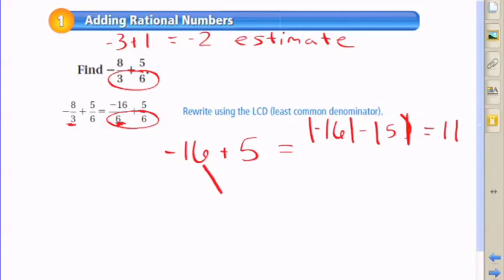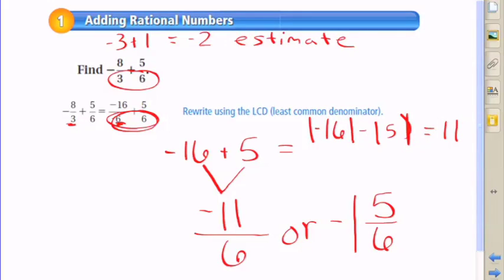We're going to use the sign from the larger absolute value. And we compare that here. I see that the larger absolute value is negative 16, so the answer is negative 11. And you throw that back over the denominator of 6. So the answer is negative 11 sixths, or if you want to use a mixed number, it's negative 1 and 5 sixths.